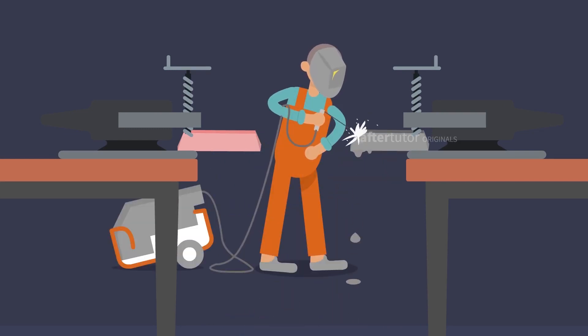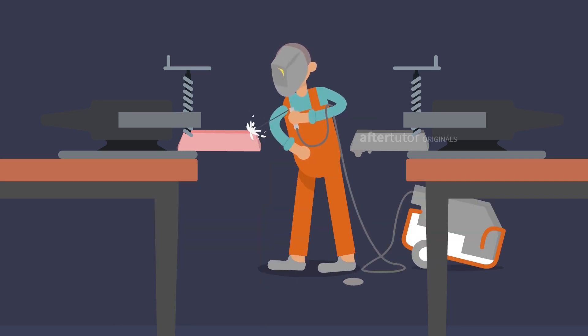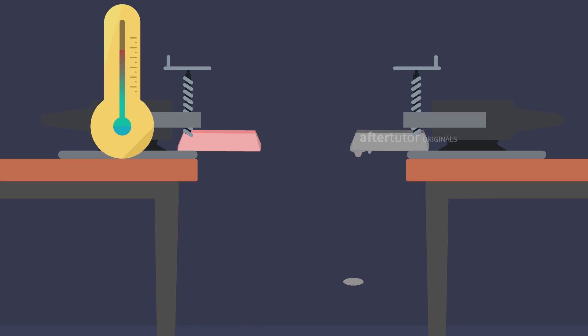When they heat the metals, pure metal melts. But the alloy takes more time to melt. The melting point of the alloy is high compared to pure metals.